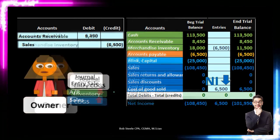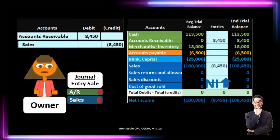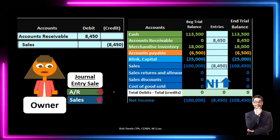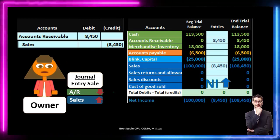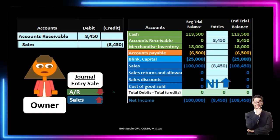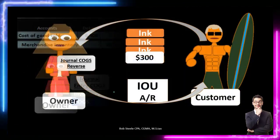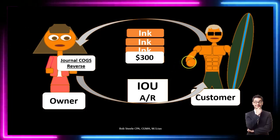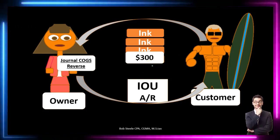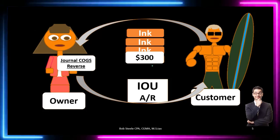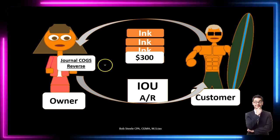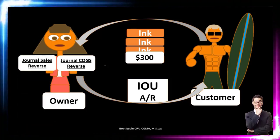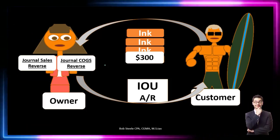These two journal entries related to the sale of inventory will essentially be reversed, with a minor change, when the inventory is returned. In the return transaction, the customer returned $300 worth of inventory at sales price. So we're going to have two components again and basically reverse what we did when we made the sale.